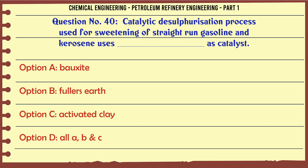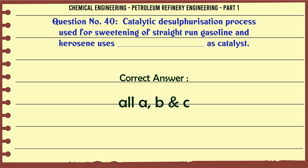Catalytic desulfurization process used for sweetening of straight-run gasoline and kerosene uses which catalyst? A. Bauxite, B. Fuller's earth, C. Activated clay, D. All A, B and C. The correct answer is All A, B and C.